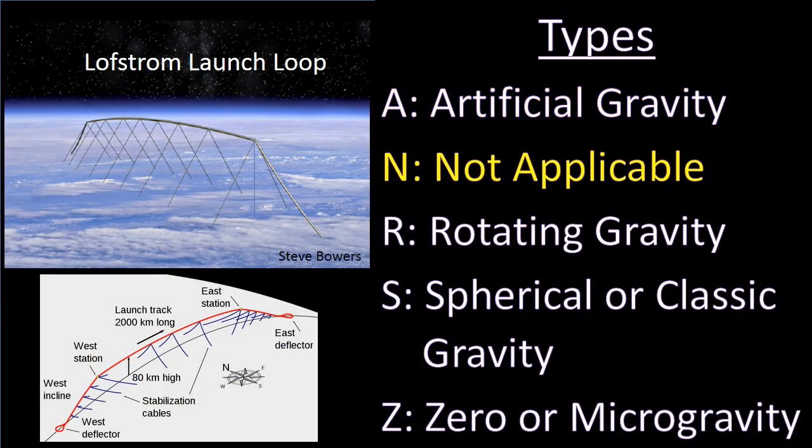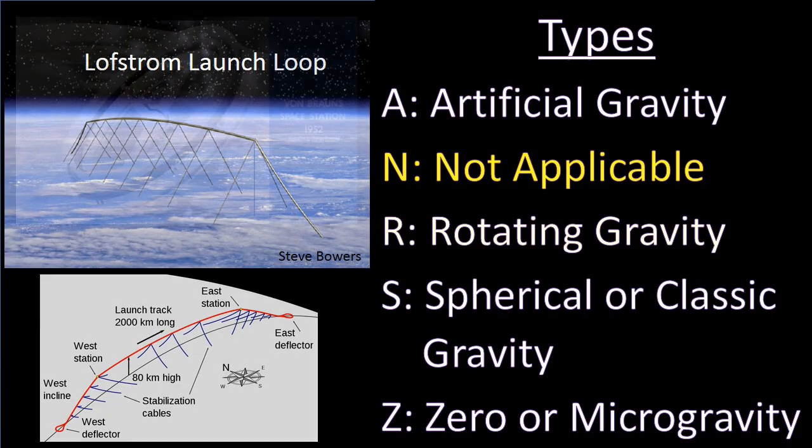We also have a lot of situations where it simply won't apply, like the Lofstrom launch loop. The gravity that's there is really not related to the object, or there's simply no reason why we care about the gravity there, like a giant space gun or a rail gun. It has nothing to do with the purpose of the object.